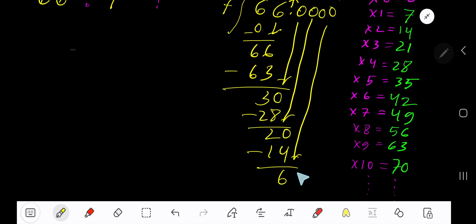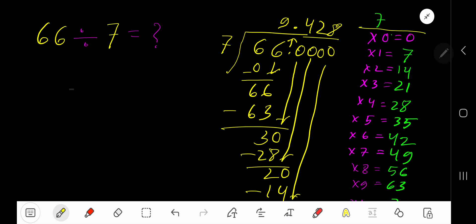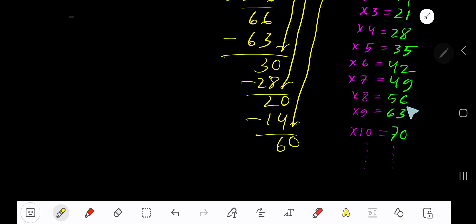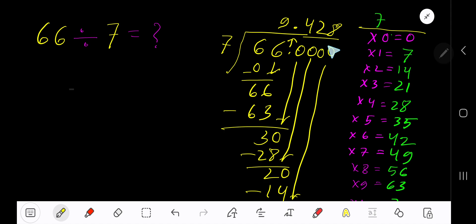Bring down another 0. 7 goes into 60 how many times? 9 times would be 63, which is too big, so 8 times. 8 times 7 is 56. Subtract to get 4. You can bring down more zeros, but since we have gotten 3 places after the decimal, we are done.